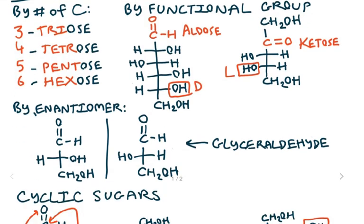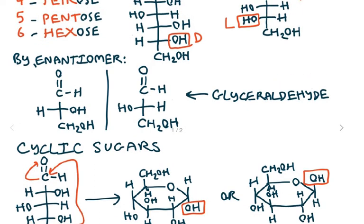And the third way to classify them is by enantiomer. An enantiomer is just a mirror image of a molecule that's not the same, because if you try to overlap them, it doesn't work. And in sugars, we use this molecule glyceraldehyde as our convention. And people did some experiments on glyceraldehyde, and they found out that when this OH group is on the right, it rotates polarized light in a right direction, and they called that dextrorotatory, or D.